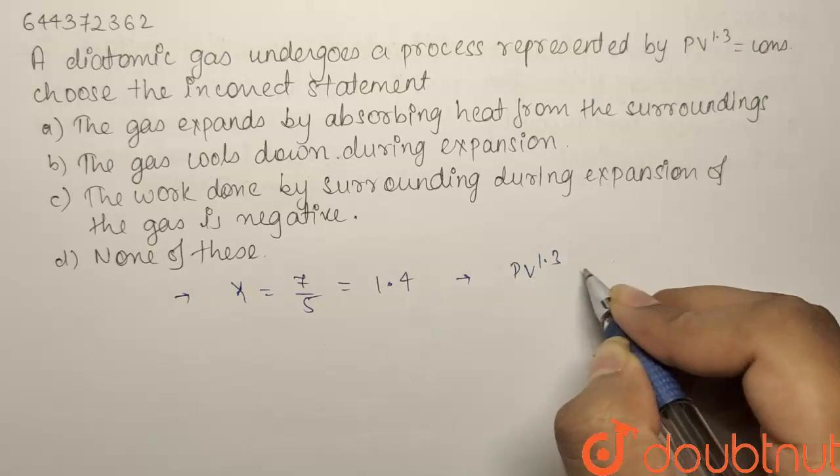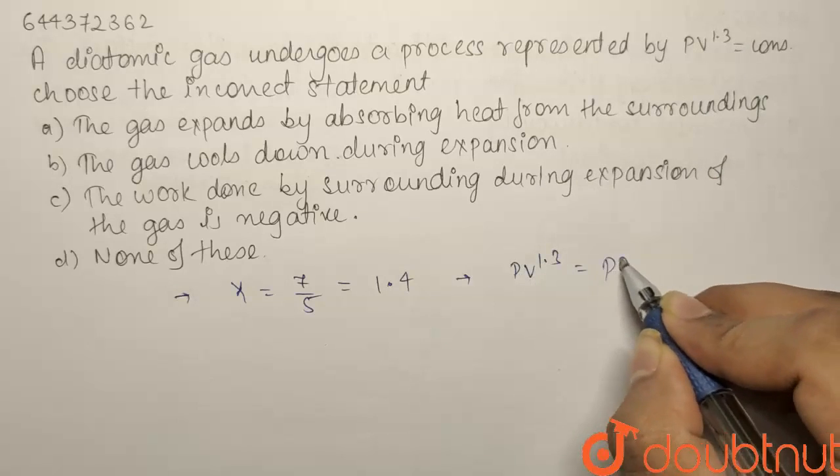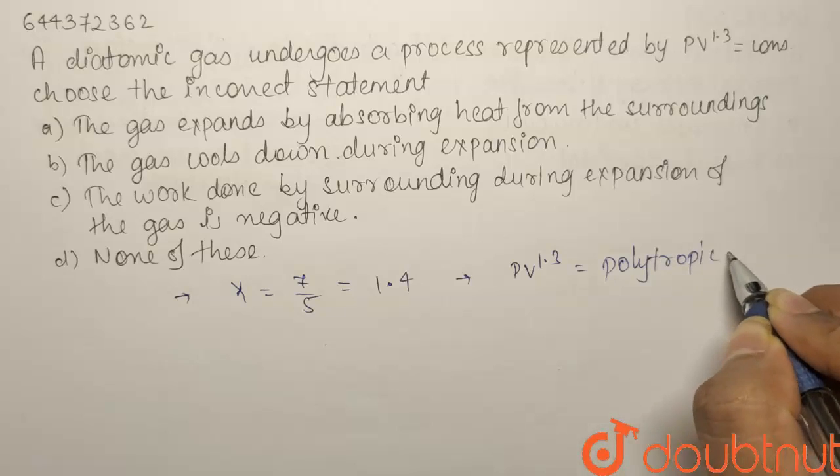So, PV to the power 1.3 is polytropic process. So, it is a polytropic process.